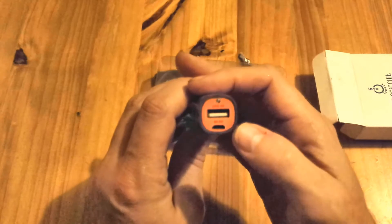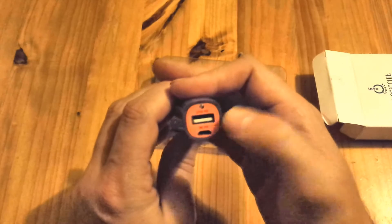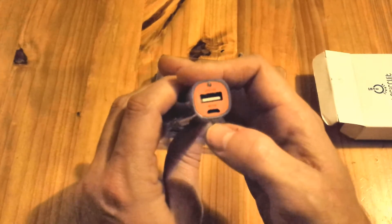On the end there we have the USB out. That's where we're going to plug the charging charger into and then the other end will go into the phone. And this is where we charge the device, so that's fairly simple.